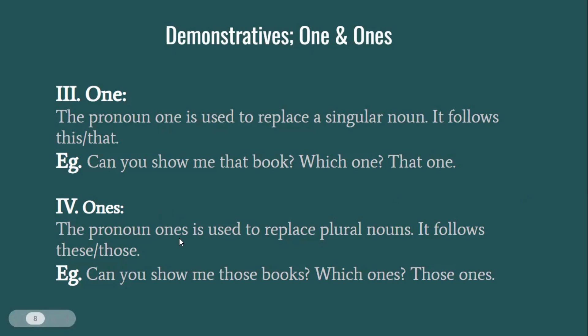Next we have 'ones'. We use 'ones' in a similar way as 'one,' but this is different — 'once' means one time, whereas here we use 'ones' to make it plural, replacing plural nouns. It is usually used after 'these' and 'those' in a sentence. For example: 'Can you show me those books?' — 'Which ones?' — 'Those ones.'